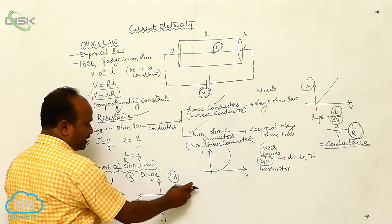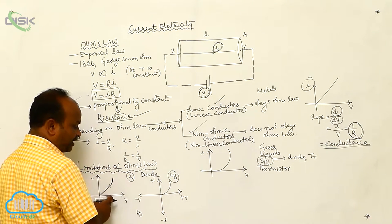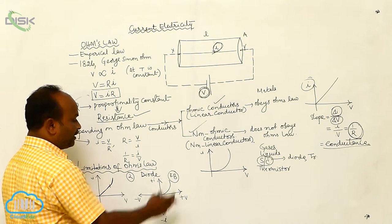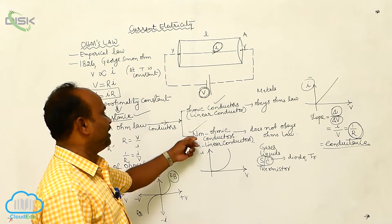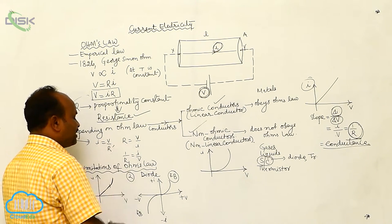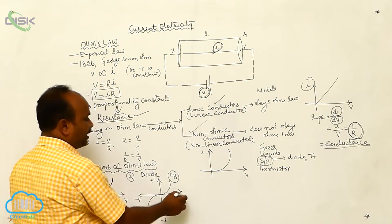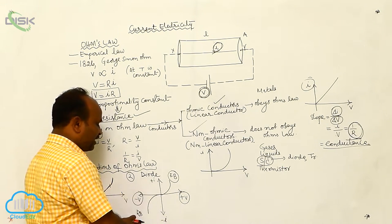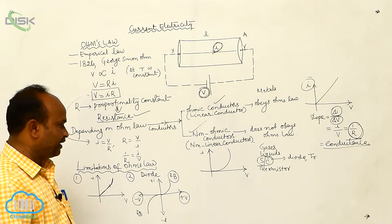In forward bias, as voltage increases, current increases in a non-linear manner. In reverse bias, as voltage increases, current also increases non-linearly. In neither case do you get a straight line, so the diode is a non-linear conductor. Therefore, Ohm's law is not applicable to diodes — it is violated.